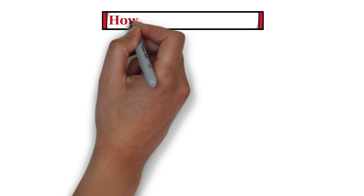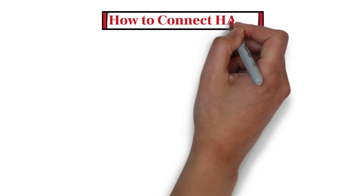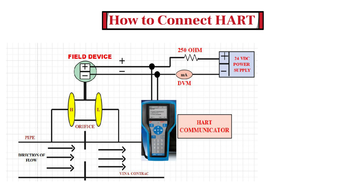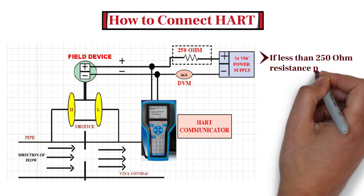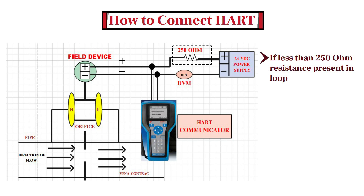First of all, let's start with how to connect the HART Communicator to a transmitter. As you can see, this diagram shows how to connect the 475 field communicator to a HART loop. It is necessary to connect a 250 ohm load resistor if less than 250 ohm resistance is present in the HART loop. For example, when you calibrate the device on bench, it is necessary to connect a 250 ohm load resistor to establish connection with the transmitter.